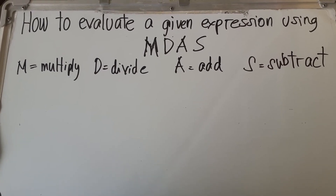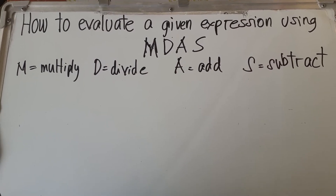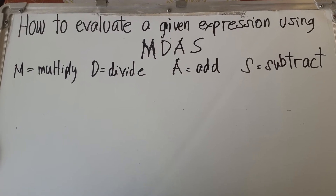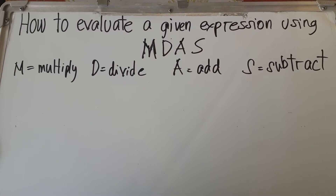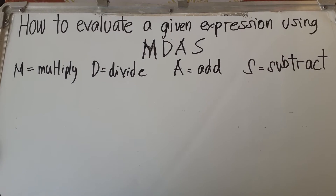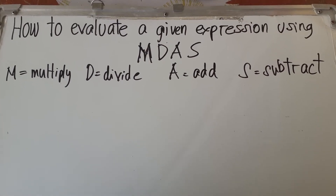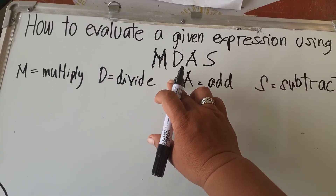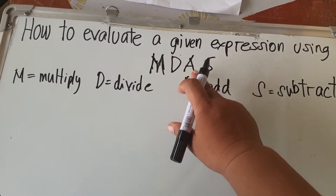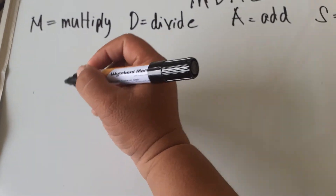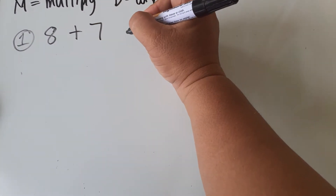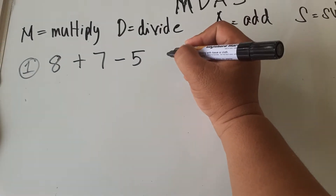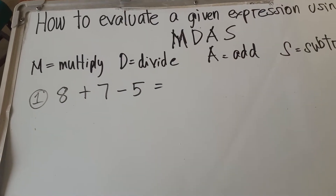Hello guys, today we are going to discuss how to evaluate a given expression using M-DAS. M-DAS stands for M for Multiply, D for Divide, A for Add, and S for Subtract. To evaluate an expression, we must follow M-DAS. So which comes first — multiply, divide, or add and subtract? We have here an example.